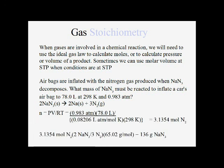Since we know the gas conditions, we start by using the ideal gas law to calculate moles of nitrogen gas. We have our pressure, volume, and temperature; we put them into the ideal gas law and we get moles of nitrogen gas. In this case that gives 3.1354 moles of nitrogen gas — but that's too many significant digits, so it should be 3.14 moles of nitrogen gas.